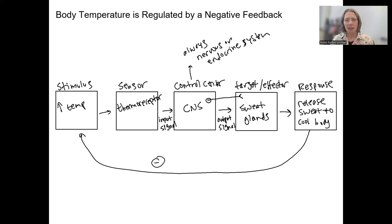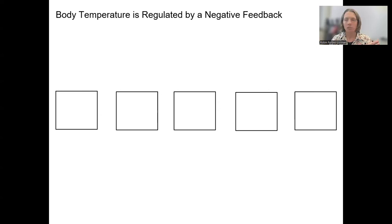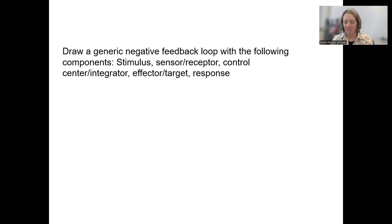You will see these five box designs a lot. You will draw them a lot. Your learning check for this one is to draw one, the generic feedback loop, that means without a specific system. Be able to remember the order of these five things. And I like to draw boxes around them just to be consistent.